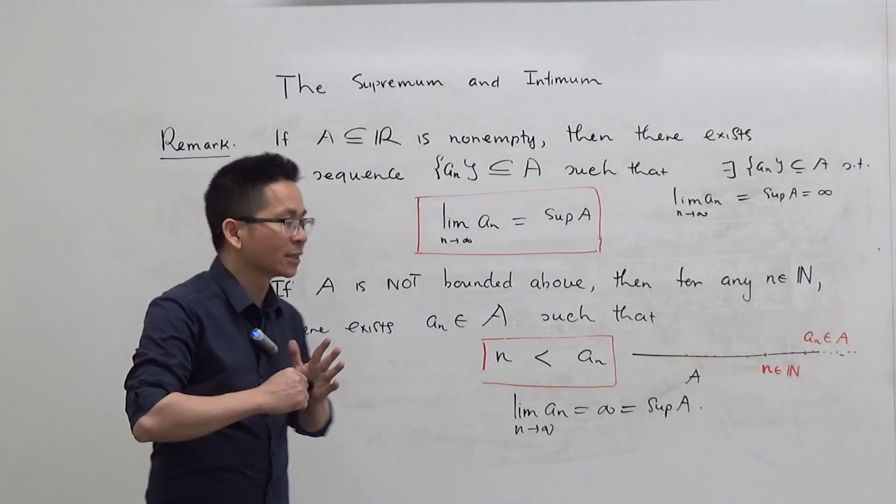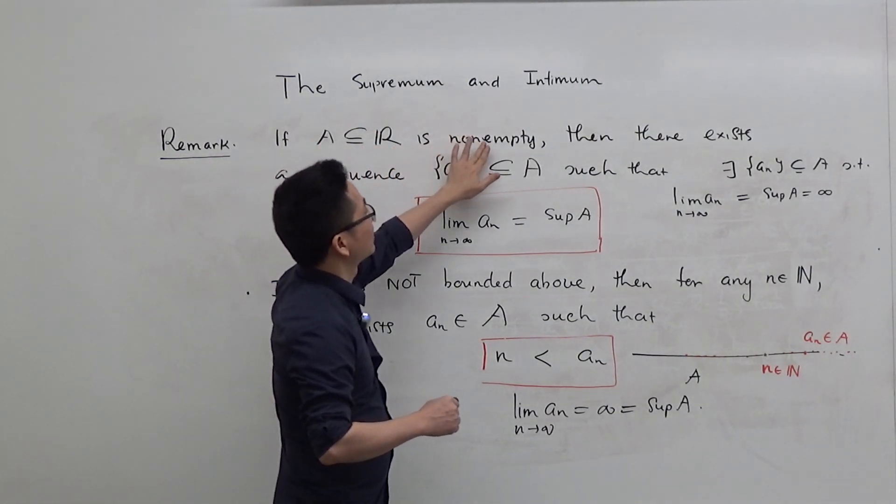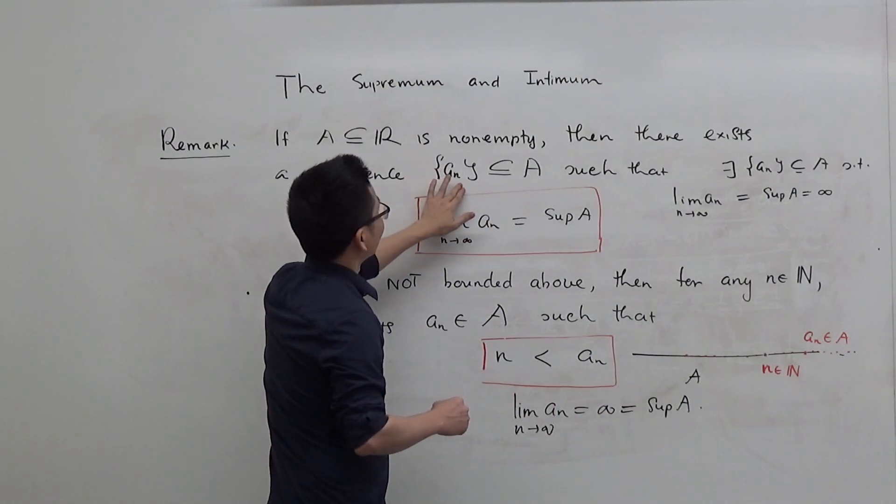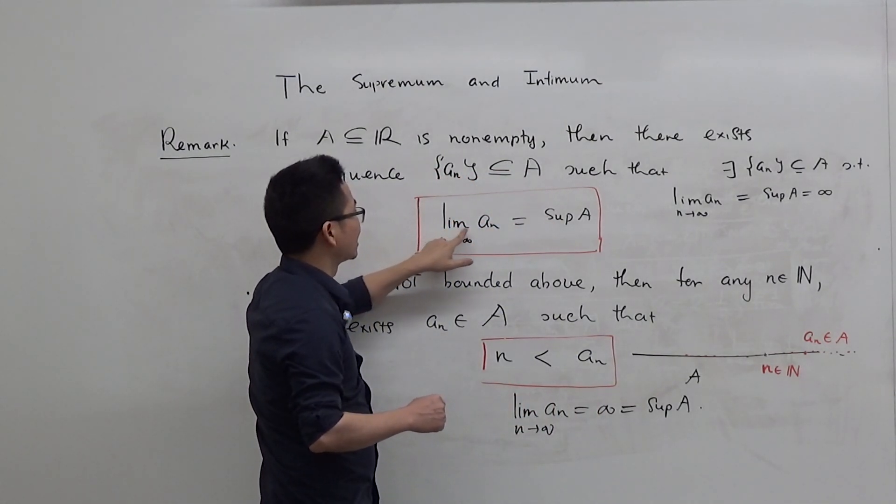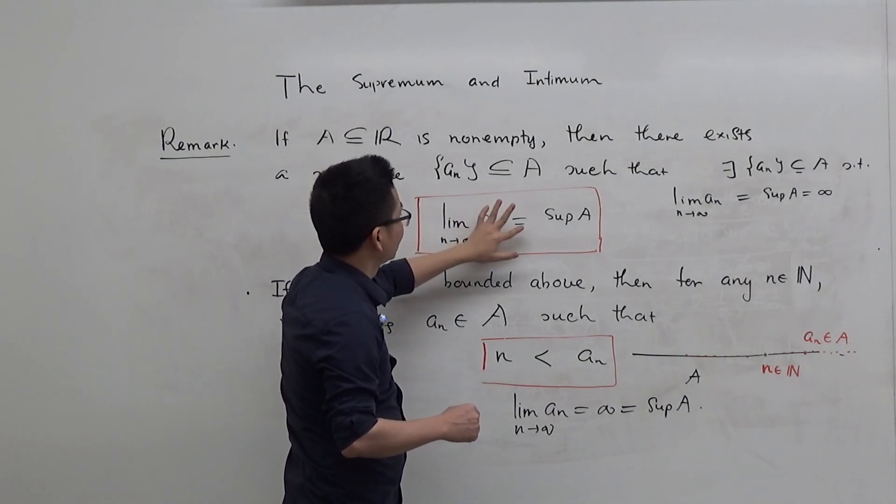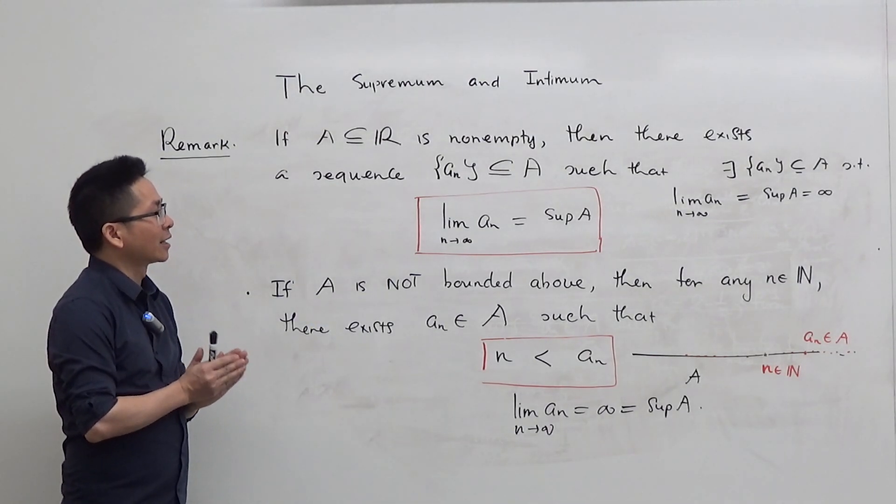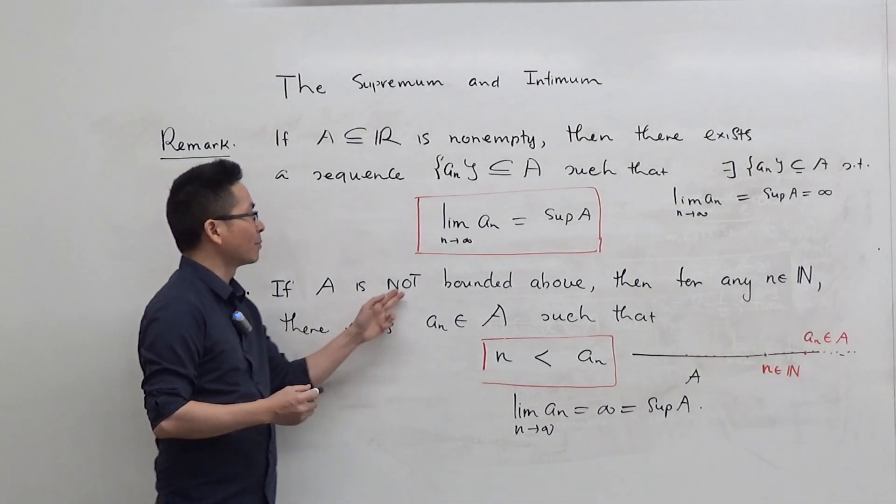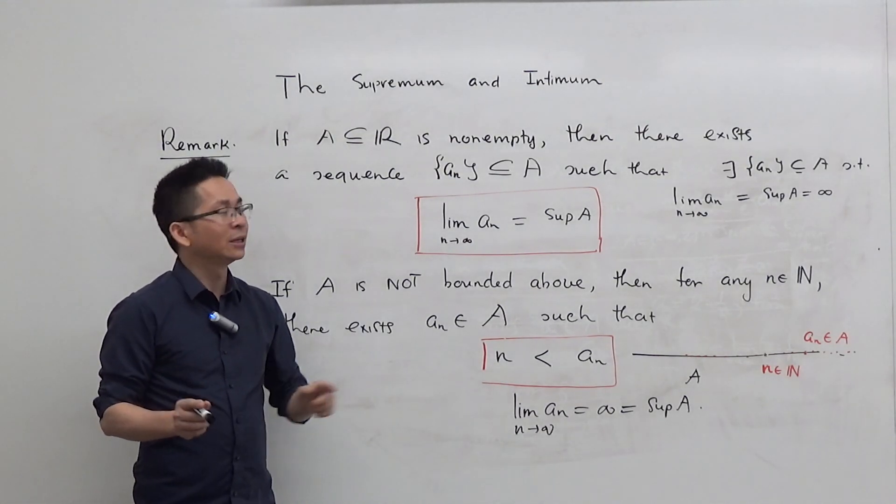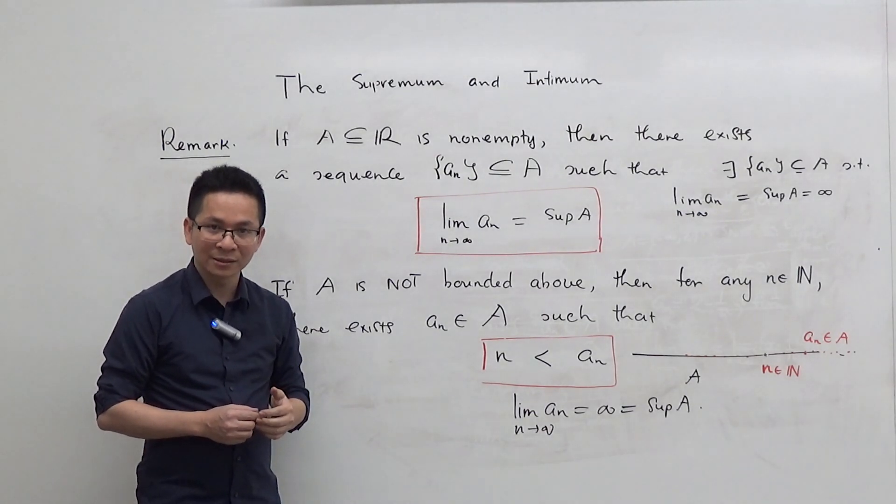We have a very nice observation that if A is just a non-empty set, then there exists a sequence in A such that the limit of A_n as n approaches infinity equals the supremum of the set. We only need to focus on the case where A is not bounded above because, if A is bounded above, this conclusion follows from the previous proposition.